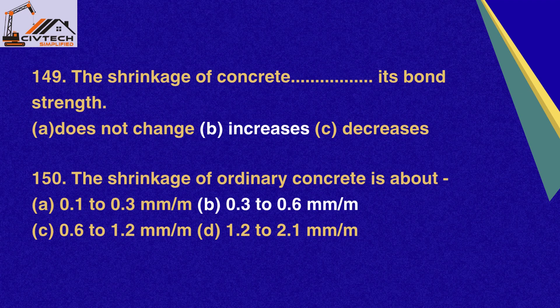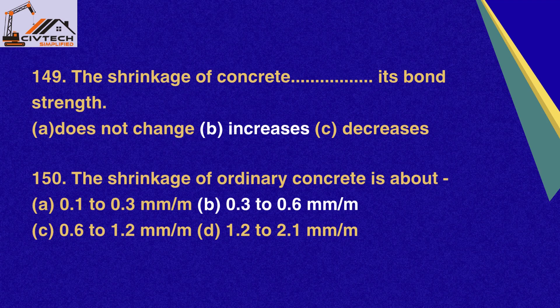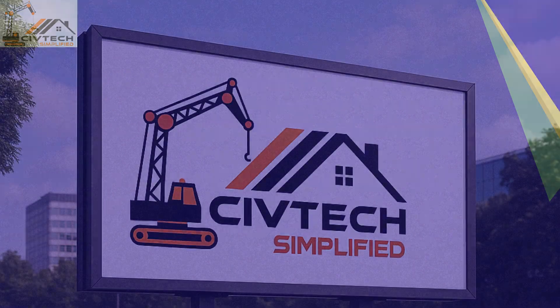Question 149. The shrinkage of concrete — its bond strength: A. Does not change, B. Increases, C. Decreases. Correct option B: Increases. Question 150. The shrinkage of ordinary concrete is about minus: A. 0.1–0.3 mm/m, B. 0.3–0.6 mm/m, C. 0.6–1.8 mm/m, D. 1.2–2.1 mm/m. Correct option B: 0.3–0.6 mm/m.